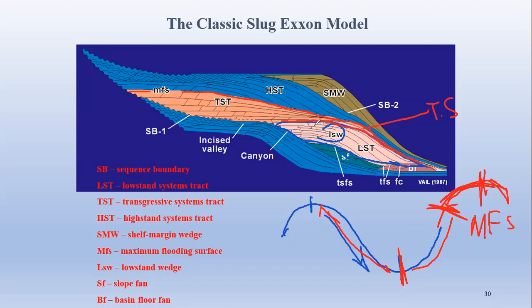This stage of the sea level cycle is represented by the high stand system track. The system track which develops at this stage is termed the high stand system track. Above the high stand system track lies the maximum flooding surface, and above that, because another fall begins, there will be formation of another sequence boundary.